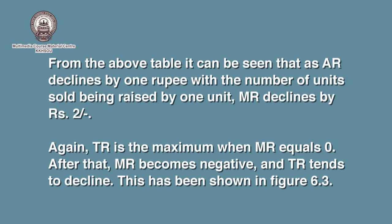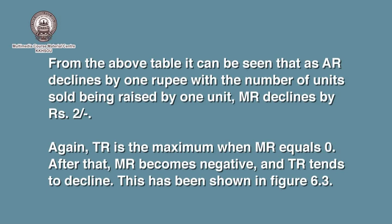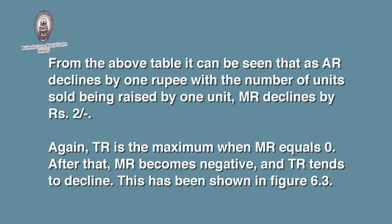From the above table, it can be seen that as average revenue declines by Rs. 1 with the number of units sold being raised by 1 unit, marginal revenue declines by Rs. 2. Again, total revenue is maximum when MR equals 0. After that, marginal revenue becomes negative and total revenue tends to decline.